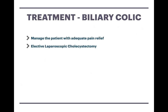So how can you treat biliary colic? Biliary colic isn't acute — the pain comes and goes in waves, the patient is not infected and is otherwise well. The best approach is to treat the patient conservatively with adequate pain relief, discharge them, and book them for an elective laparoscopic cholecystectomy, which can occur in three to six months. There is no immediate concern for the patient's health at this point, hence why we do it electively rather than emergently.